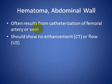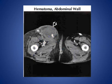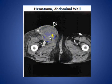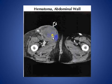Hematoma often results from catheterization of the femoral artery or vein, and it should show no enhancement on CT or flow on ultrasound. As we see here in axial CT scan at the level of the thigh, there is a large soft tissue mass on the right side resulting from AV fistula surgical revision. This hematoma shows no enhancement, and there is active bleeding in this area.